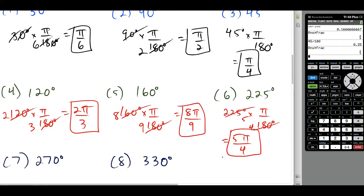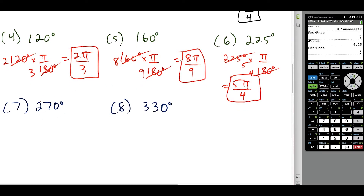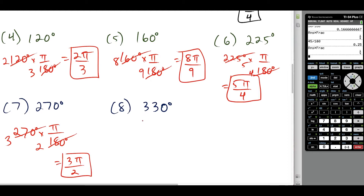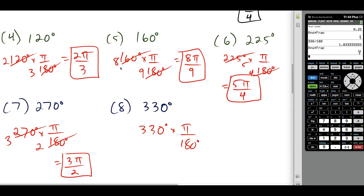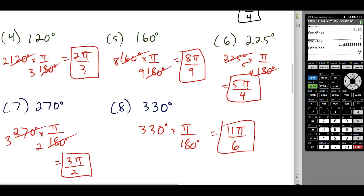Moving on, we convert 270 degrees to radians: 270 times π over 180, divide top and bottom by 90, giving 3 over 2, so 3π over 2 radians. For 330 degrees, multiply by π over 180. Using the calculator trick with 330 over 180, press Math → Enter → Enter, it reduces to 11 over 6, so our final answer is 11π over 6 radians.